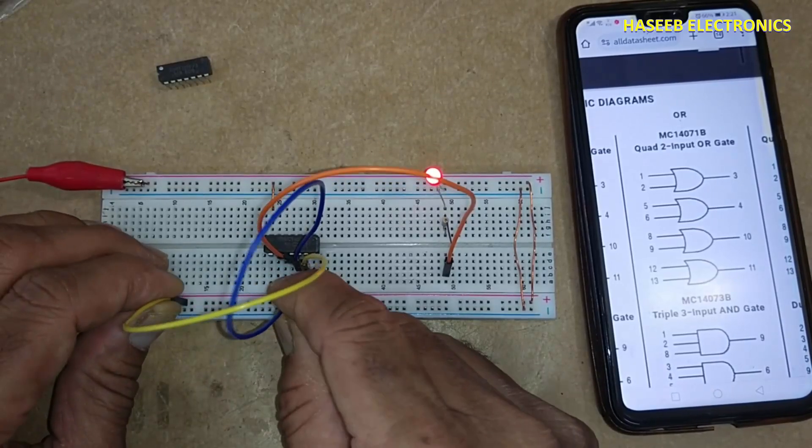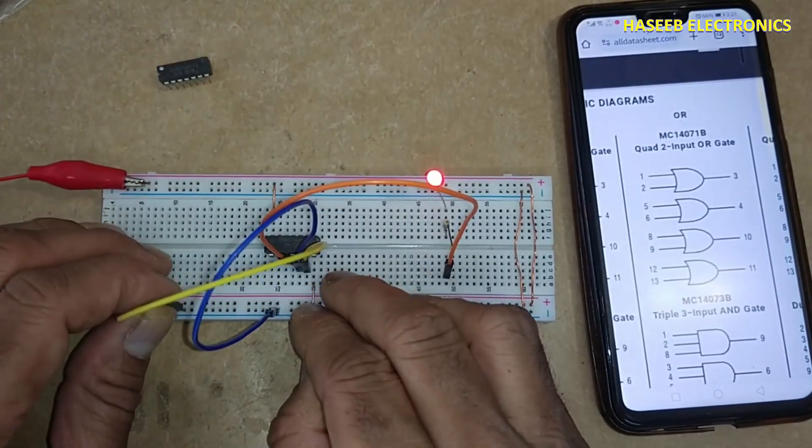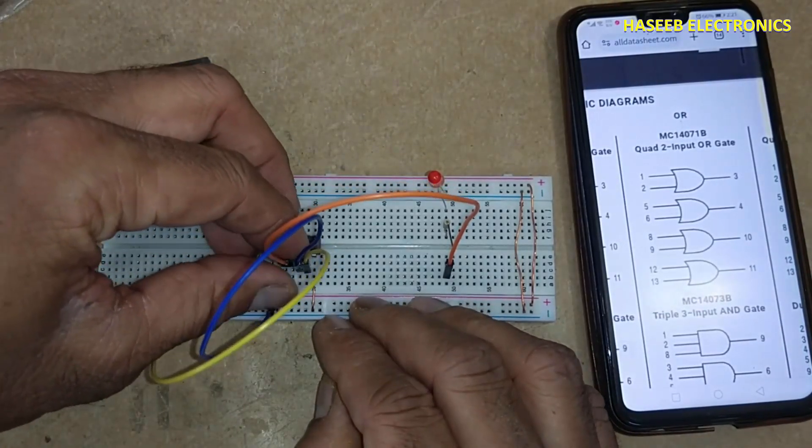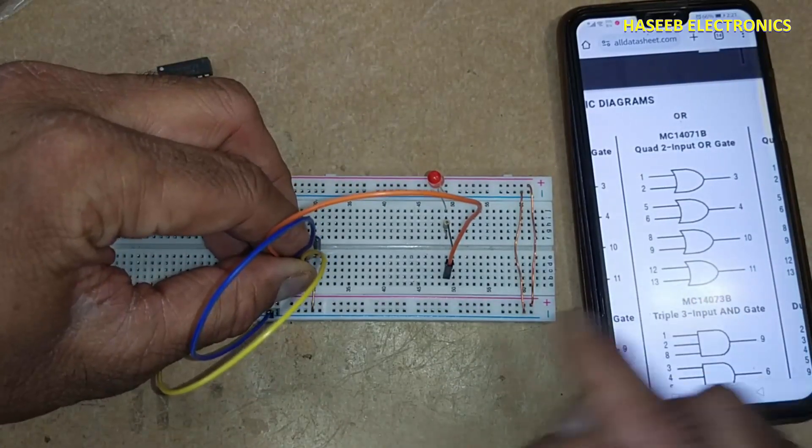All low, output low. Third side gate pin number 10 output.